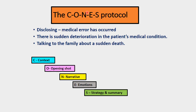Next is the CONES protocol. This protocol is for disclosing a medical error that has occurred, when there is sudden deterioration of the patient's medical condition, or when talking to the family about a sudden death. In these three conditions you follow the CONES protocol. CONES stands for: C — Context, O — Opening Short, N — Narrative, E — Emotions, S — Strategy and Summary.